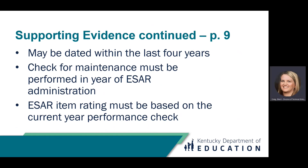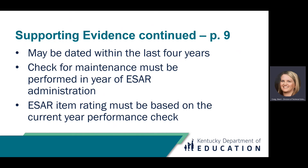Existing documentation for a skill assessed by an ESAR item may be dated within the last four years. However, when a student masters and performs a skill independently in a previous year, an activity or observation to check for maintenance of the skill must be performed during the school year of the ESAR administration. To retain a previous status that a student has mastered and performs independently, the current year performance check must indicate the student continues to demonstrate the skill consistently over time. The ESAR item rating must be based on the current year performance check. The check for maintenance takes precedence over previous data and substantiates the response selected on the ESAR.